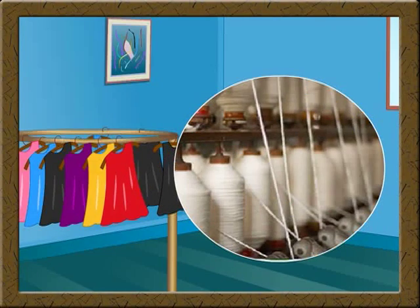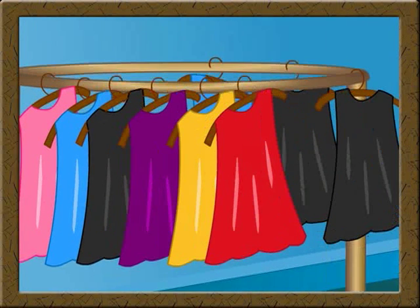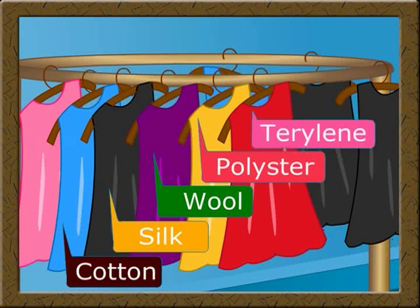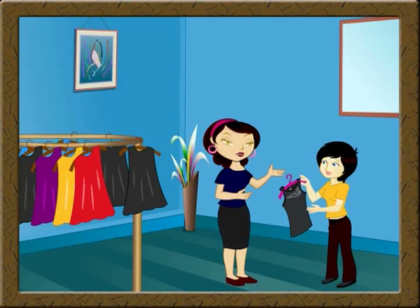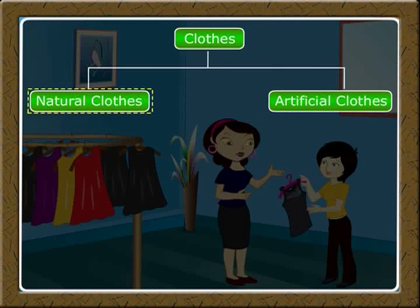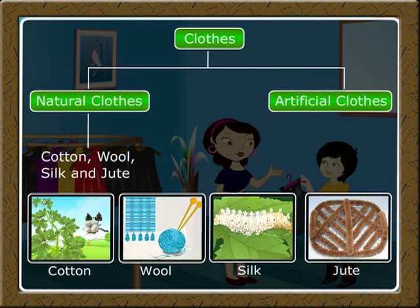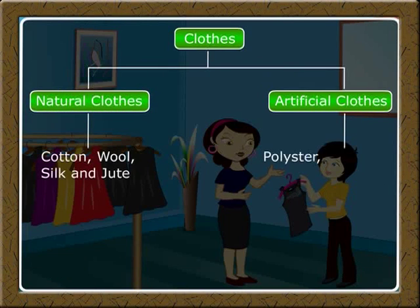Clothes are made of different fibers. Fibers are spun into threads, and from the thread, clothes are made. There are different types of clothes, like cotton, silk, wool, polyester, and terrylene. Again, these can be classified into natural clothes and artificial clothes. Cotton, wool, silk, and jute are made up of natural fibers — that is why these are called natural clothes. Polyester, terrylene, and acrylic are made of synthetic fibers, and are therefore artificial clothes.